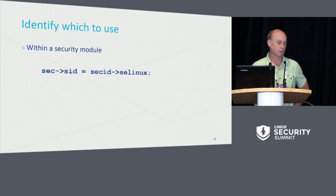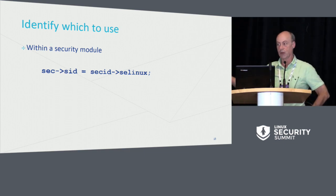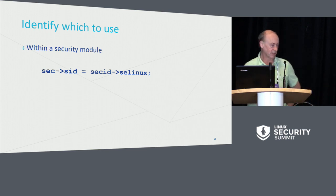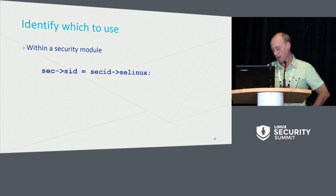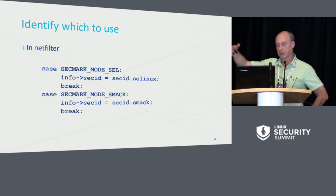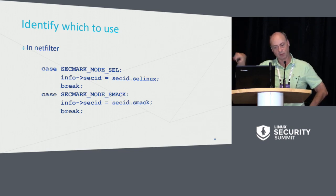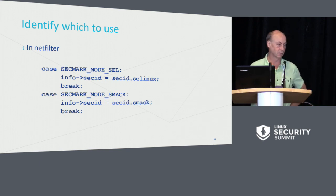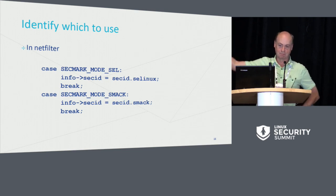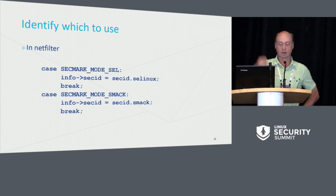When you use the struct SecID, you need to identify which entity you're going to want to use. If you're within the security module, that's easy — you just use your own. If you're in SELinux, you use the SELinux field. If you're in SMAC, you use the SMAC field. If you're in Netfilter, Netfilter has a mode set up so you can identify which security module you're going to use — currently the only one defined is SELinux, and SMAC piggybacks on this in an inappropriate fashion, so we have to add an entry for SMAC. Because you've got the differentiation available in the structure, you can identify which one that's going to go to. If you're not doing stacking, it'll all just go into the same one.